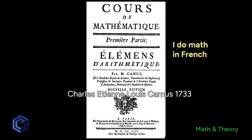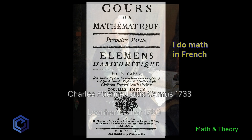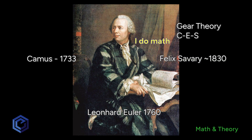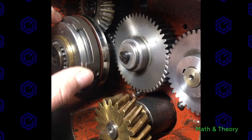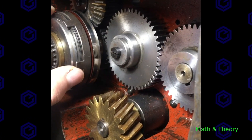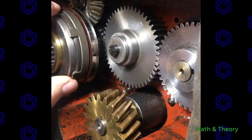Things got serious in the math world with this French guy, Camus, and then really serious when Euler got involved and wrote his theory of gearing in 1760. Euler was really the mastermind of putting the complete theory together. Camus prior to him, and Savory after — commonly people call it the CES thing: Camus, Euler, Savory. These guys figured it out and it's still the system we use to this day: amazingly functional involute gearing for transmission of torque, actuation, and rotational precision.